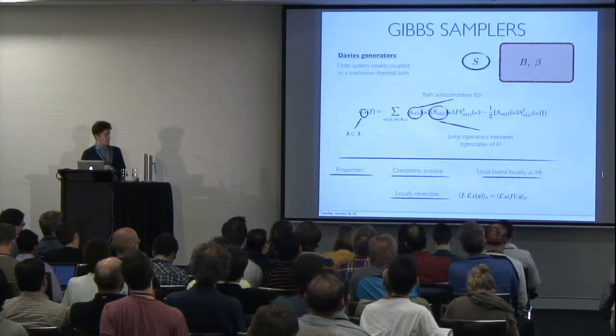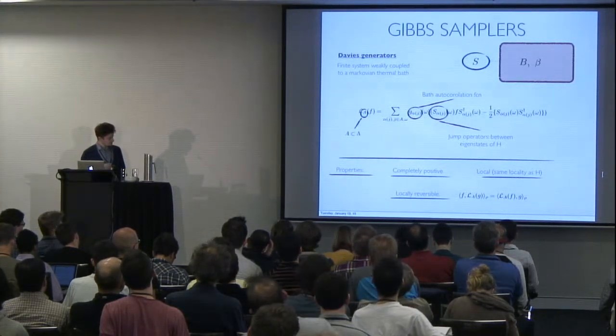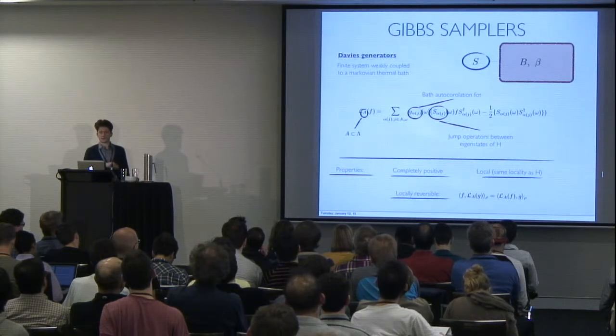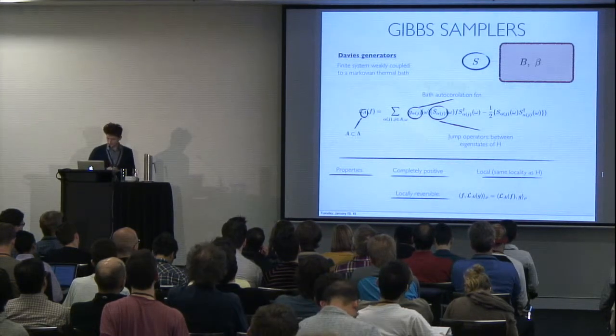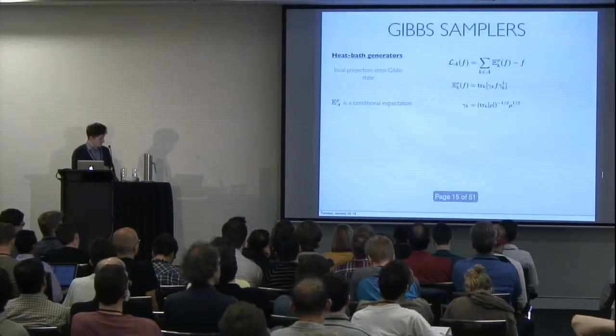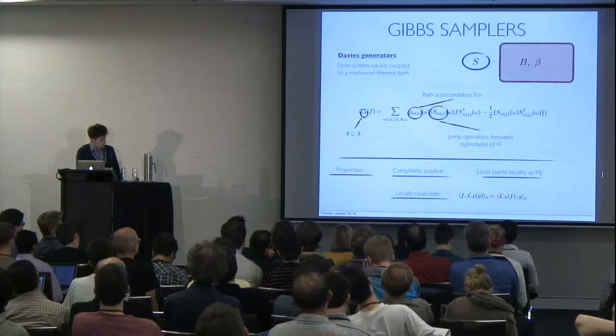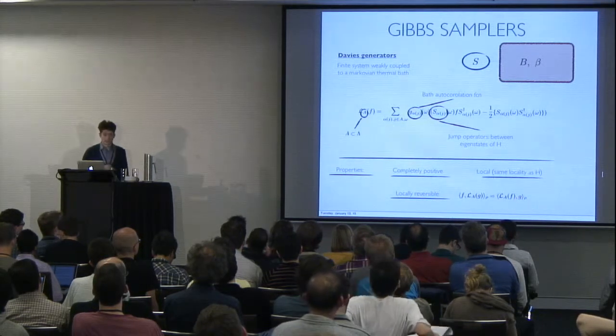And now the less trivial property is that they're going to be locally reversible. Classic literature goes under the name of detailed balance. For people interested in Hamiltonian complexity, this is very closely related to frustration freedom of Hamiltonians. In particular, this condition itself guarantees that rho, the Gibbs state, is going to be the stationary state of your system.